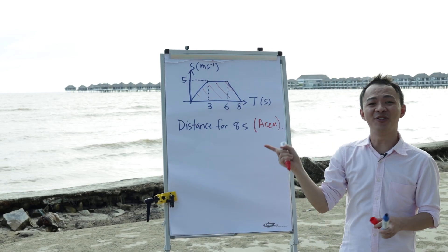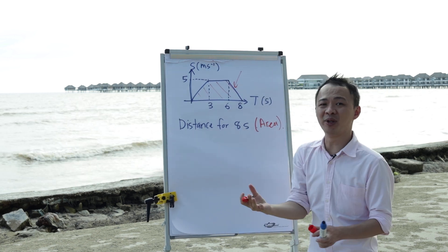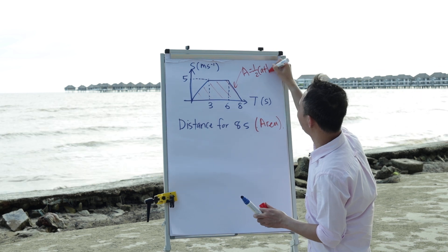And you see carefully about this area, you should know this one is a trapezium. So for trapezium, we have a formula for trapezium area, equals to half A plus B multiplied by height.